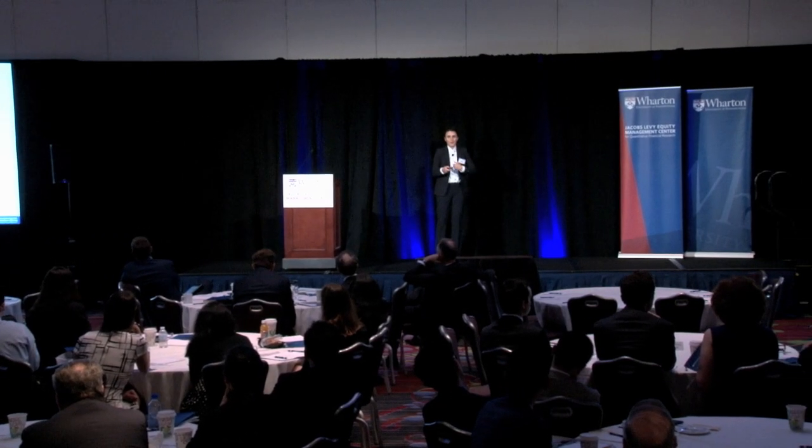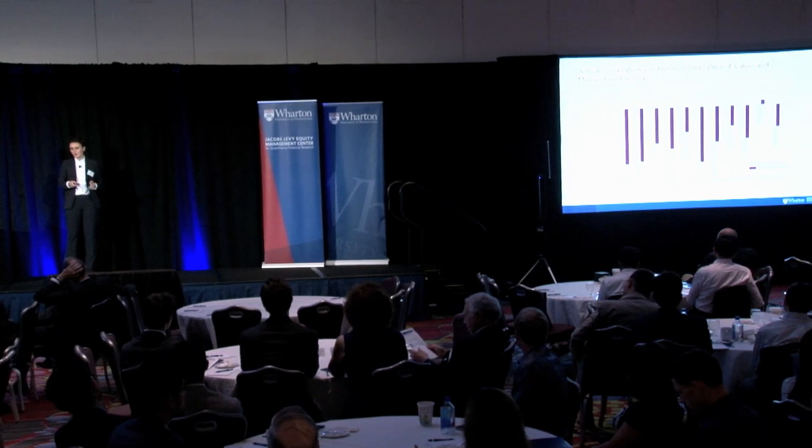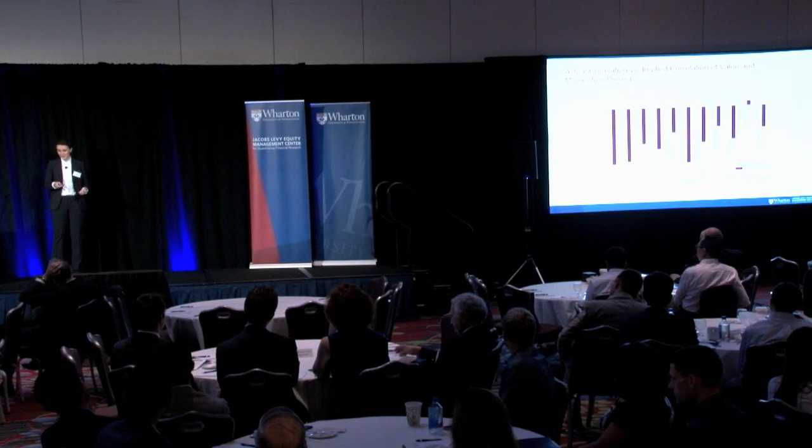To better see that the differing factor loadings capture the negative correlation, we compute the implied coefficient of correlation — multiplying factor loadings (betas) times the macroeconomic factor time series to get implied value and momentum return series, then computing implied correlation. The gray bars represent the realized correlation between the strategies; red bars represent the model-implied correlation. With the exception of fixed income, the model does a pretty good job capturing the negative correlation between the two strategies.